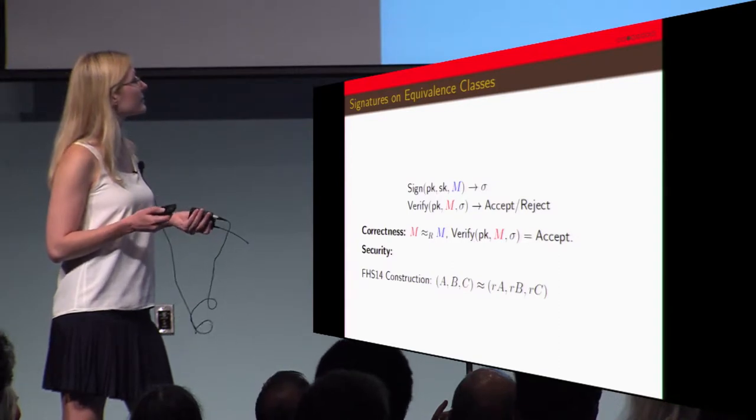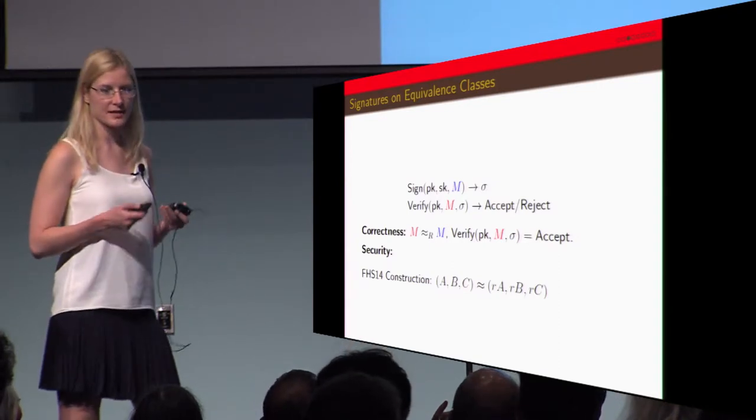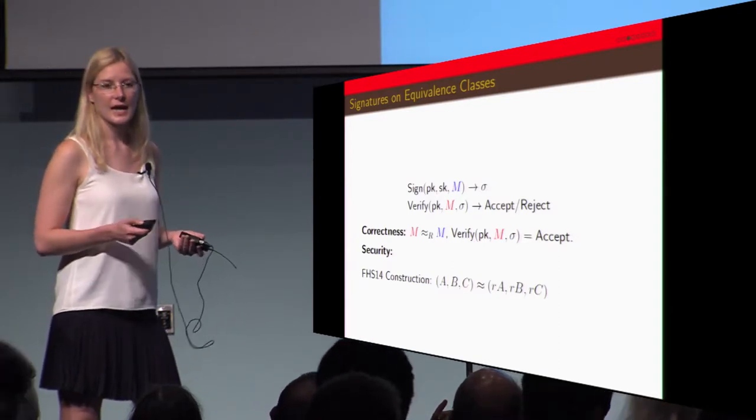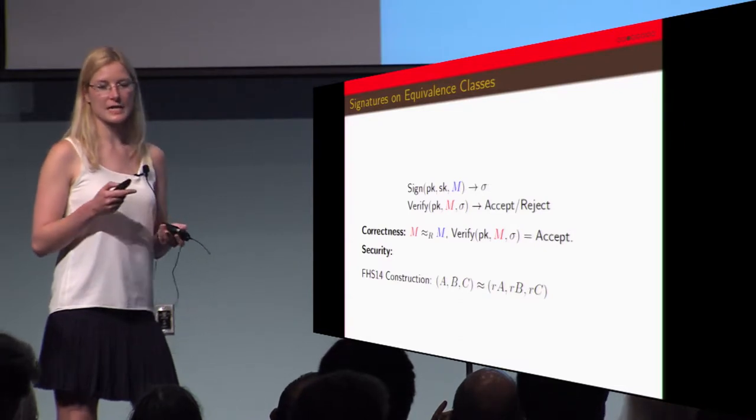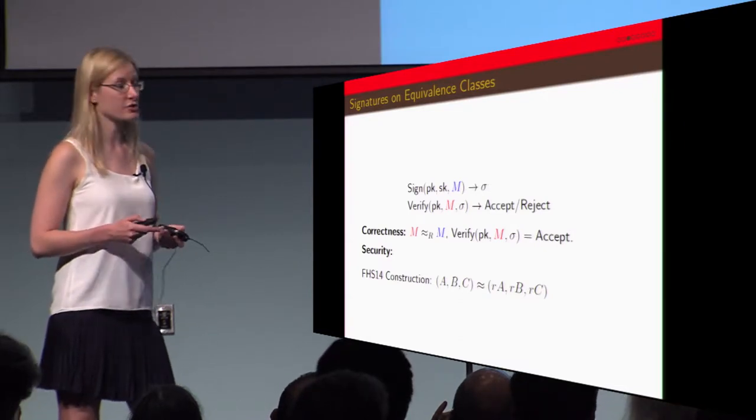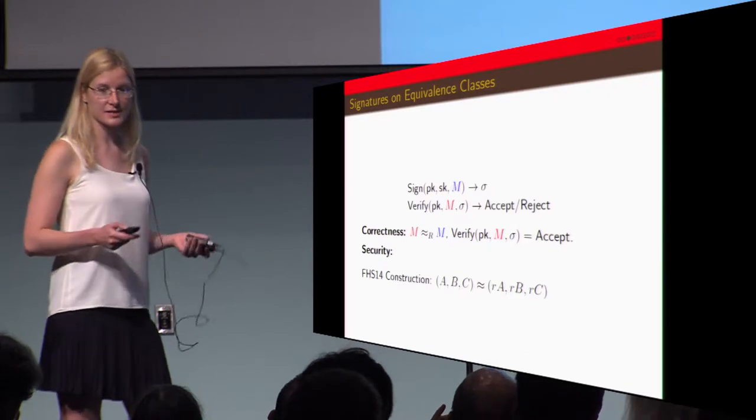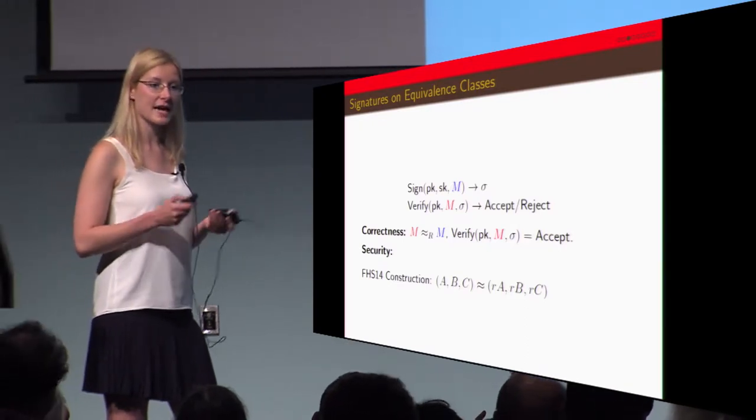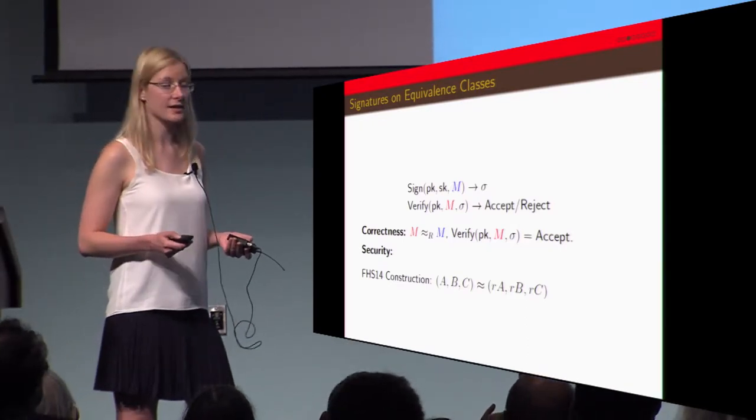Security basically means that the adversary produces a forged public key, message and signature, and the forgery is successful if the message is not in any equivalence class that's already been signed.